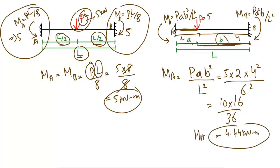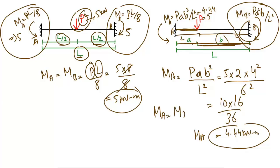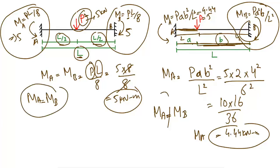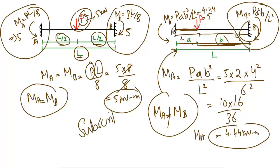So the moment at point A is 4.44 kN·m. Similarly, knowing all these values, just put them into the formula and you will find the moment at the other support. In this case the moment at A will not be equal to the moment at B, because the loads are not acting symmetrically — unlike the previous case where MA equaled MB. I hope you guys understand. Don't forget to subscribe to the channel for daily civil engineering videos.